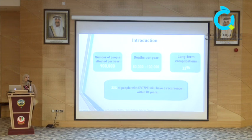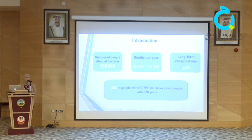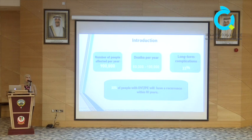According to the latest CDC review in 2023, the number of people affected per year with VTE is around 900,000. The mortality rate per year is between 60,000 to 100,000 people. Of those with VTE, 33% will go through long-term complications, and 33% of people with VTE — either DVT or pulmonary embolism — will have a recurrence within 10 years.